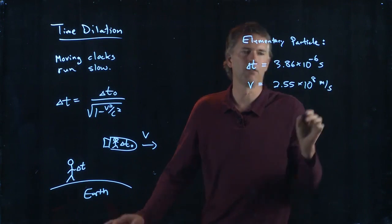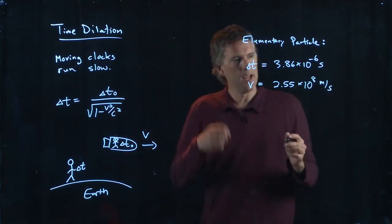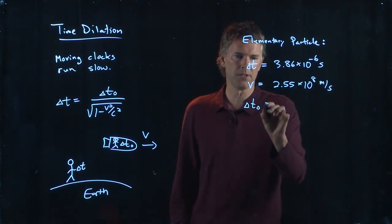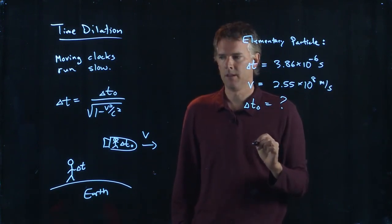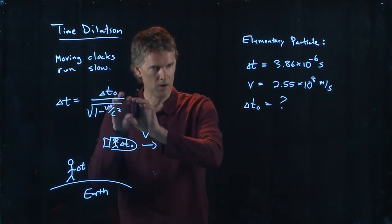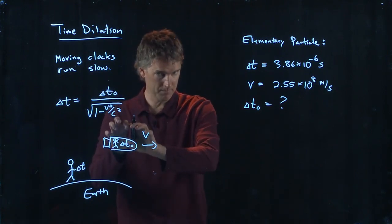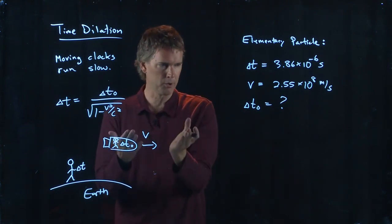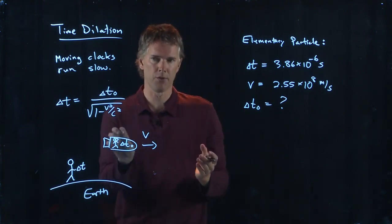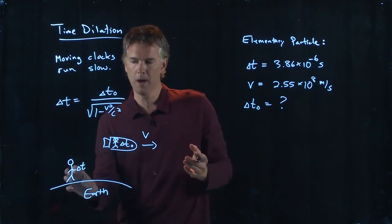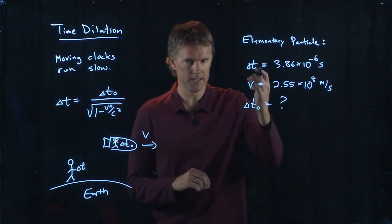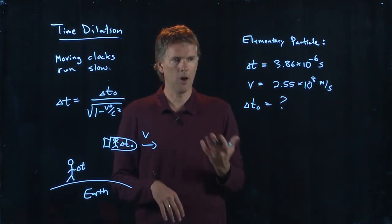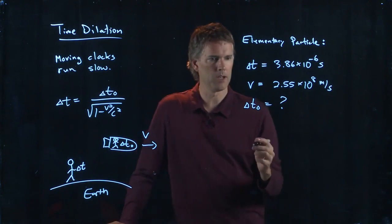In this question we need to answer: what is Delta T naught? In other words, the particle is now the person in the spaceship flying past. The lifetime is how long is that particle alive as measured under a clock. What we measure is Delta T here on Earth.